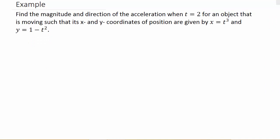Find the magnitude and direction of the acceleration when t equals 2 for an object moving such that its x and y coordinates of position are given by x = t³ and y = 1 - t². Let's find the second derivative of x.